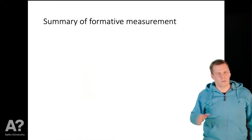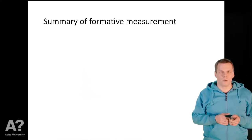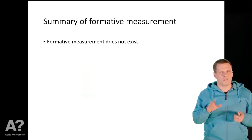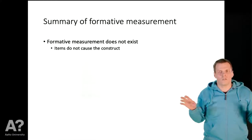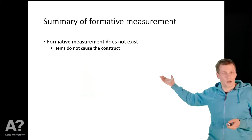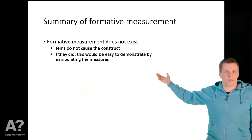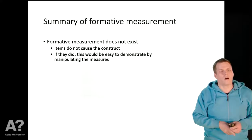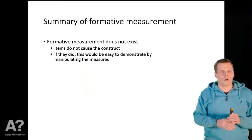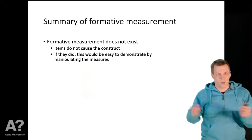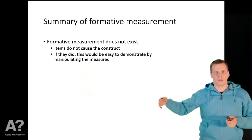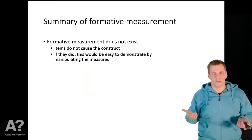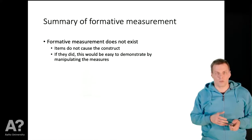To summarize formative measurement: first, formative measurement as literally conceived does not exist — indicators don't cause the concept. If you think they do, this is easy to test experimentally: instruct one group to always answer on one side of a scale and another group on the other side, then wait a year and measure the latent variable supposedly caused by those indicators. If you find a group difference, that would be a huge finding. I don't think anyone ever will, because the idea is simply not realistic.